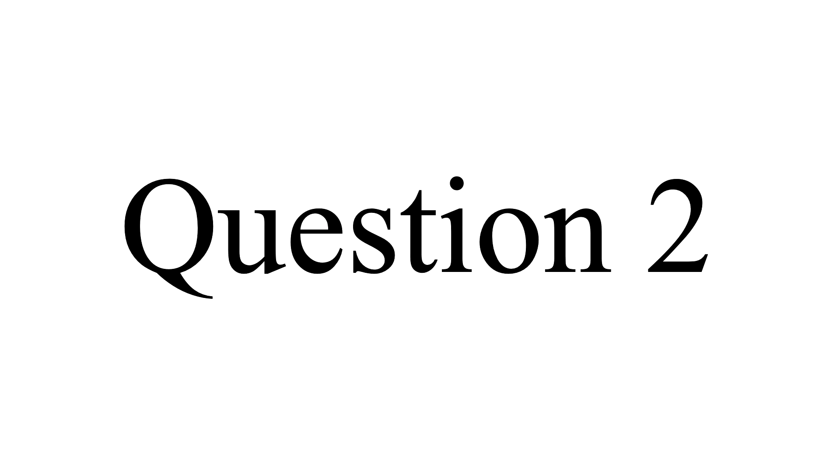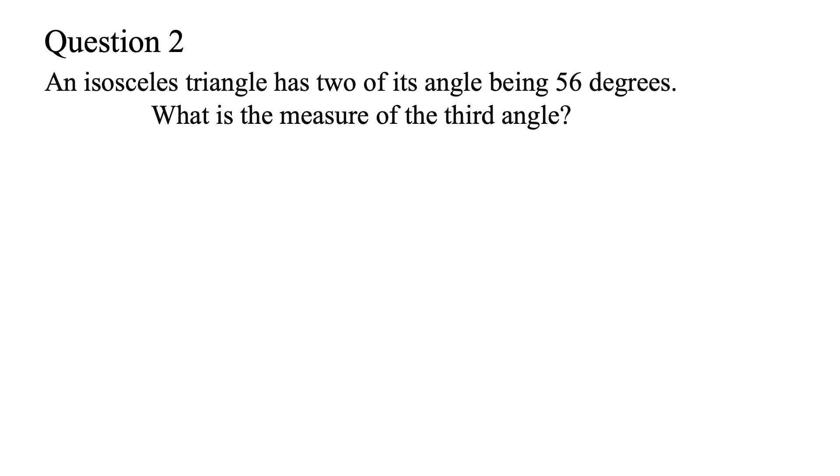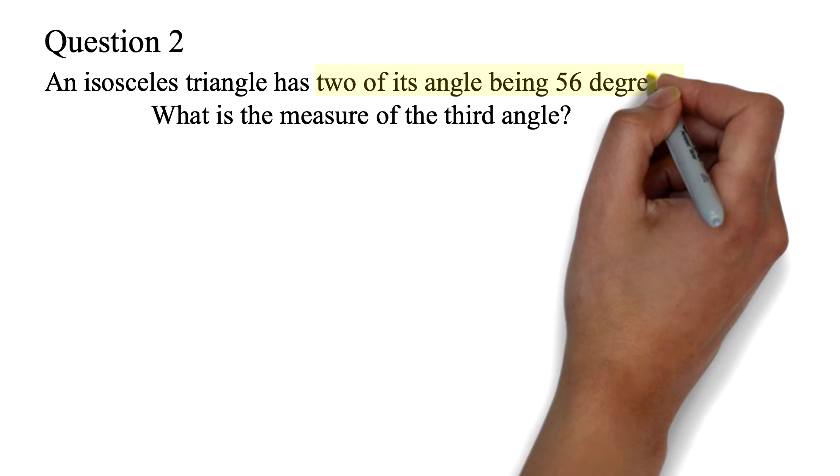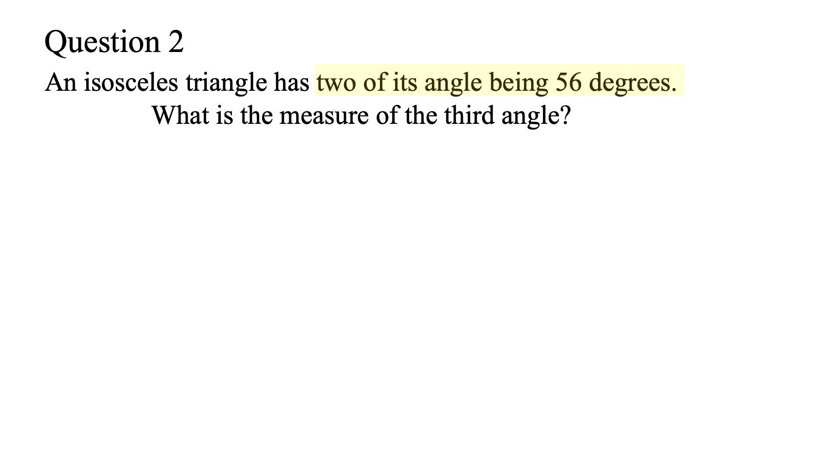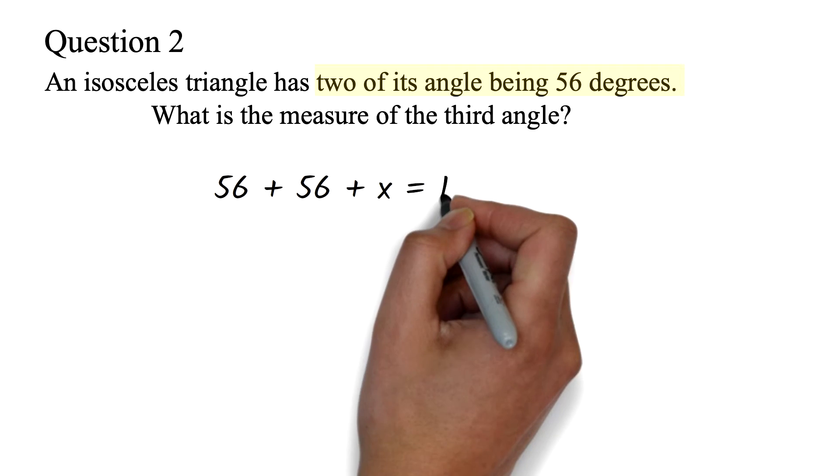Question 2. An isosceles triangle has two of its angles being 56 degrees. What is the measure of the third angle? We know that the sum of the interior angles of a triangle is 180 degrees. We have been given two of the angles as 56.